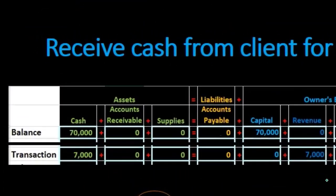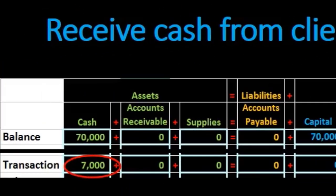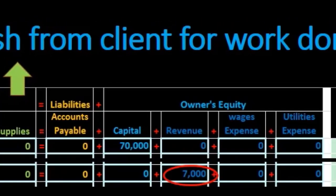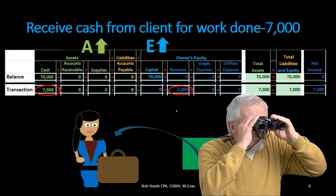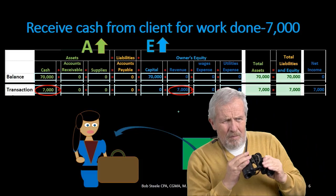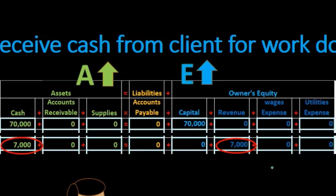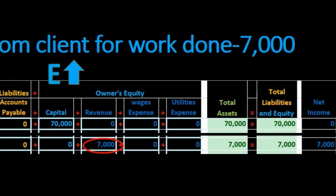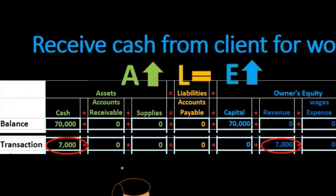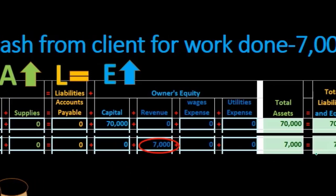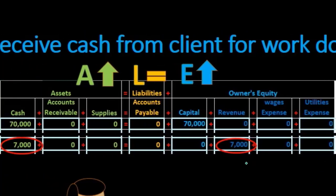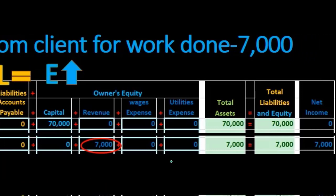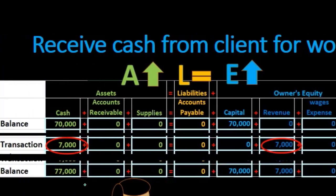Looking at the equation, cash is going up by $7,000 and revenue is going up by $7,000. Note that revenue only goes in one direction — up — as do all income statement accounts. Revenue and expense accounts only go in one direction. Total assets equal total liabilities plus equity, and net income has increased: revenue of $7,000 minus expenses of $0 gives net income of $7,000.